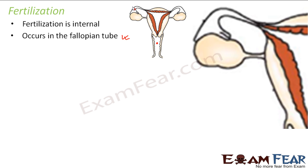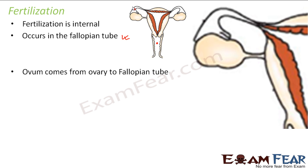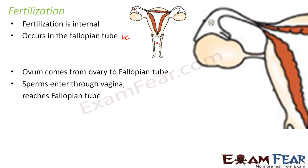Let us look at the process of fertilization. In this picture I have focused only on the fallopian tube. The ovum comes from the ovary to the fallopian tube. Sperms first enter through the vagina during intercourse and they also reach the fallopian tube.